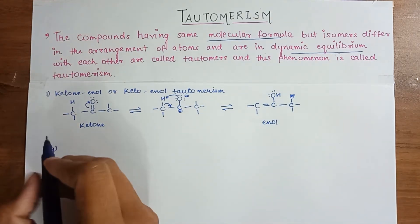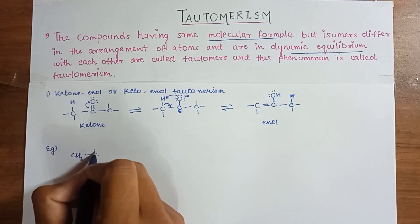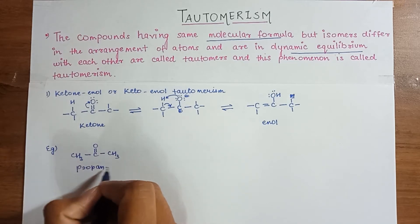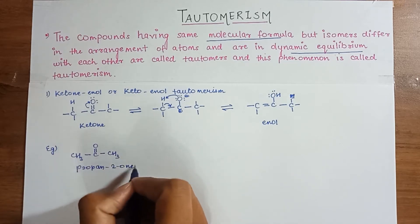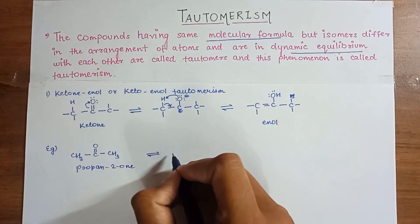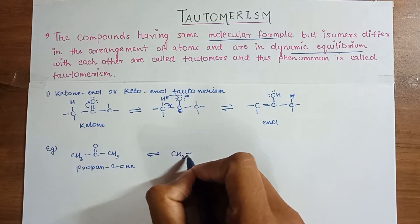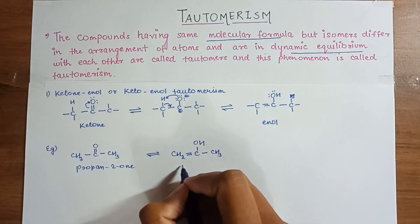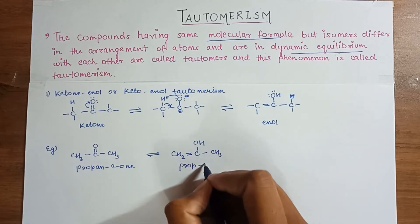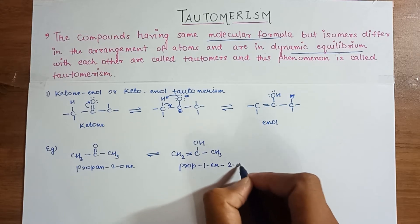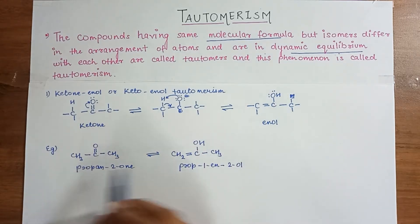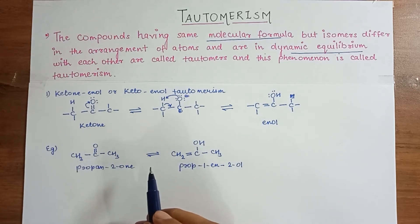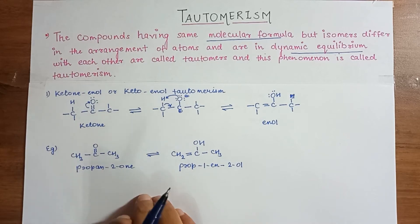The example is CH3-C(=O)-CH3, which is propanone, in the ketone form. The enol form is CH3-C(=O)-CH3 with rearrangement. These two are isomers in which the arrangement of atoms is different and they are in dynamic equilibrium — so this is a pair of tautomers.